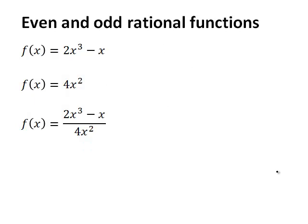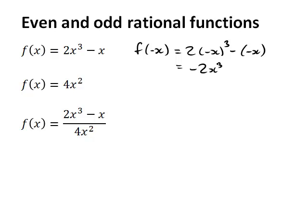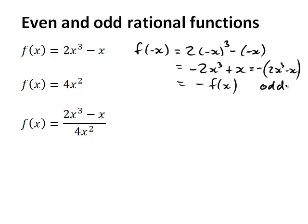Another example: let's look at 2x cubed minus x. f of negative x is going to be 2 times negative x cubed minus negative x. Now, negative x cubed is negative x cubed, so we get negative 2x cubed, and minus minus is plus x. Now let's see if we can write this as negative of f. It turns out this is minus 2x cubed minus x, and that is indeed negative f of x. Because f of negative x equals negative f of x, this means that this function is odd.